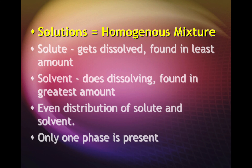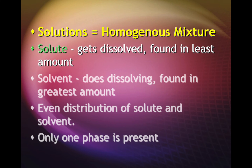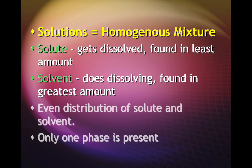A solution is a homogeneous mixture. A solution is made up of a solute — a solute is a substance that gets dissolved and is found in the least amount — and a solvent, which does the dissolving and is found in the greatest amount. In a solution, there is an even distribution of solute and solvent; the solute gets completely dissolved. In a solution, only one phase is present — it looks like it's made up of only one component.